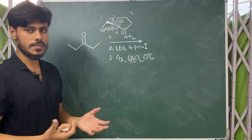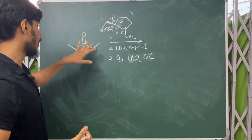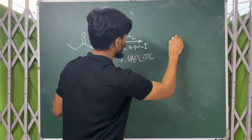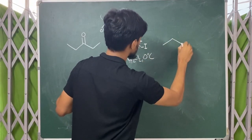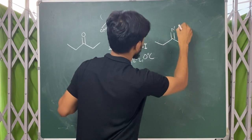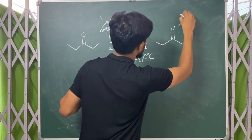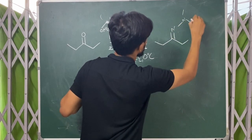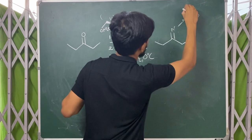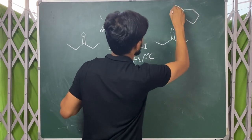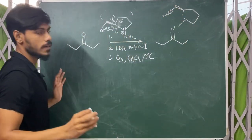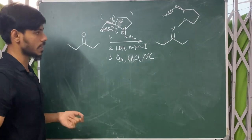In the first step, R-AMP will form a hydrazone with the ketone — N=N — and here you have the OMe group. This is our hydrazone. This is the first step of the reaction.